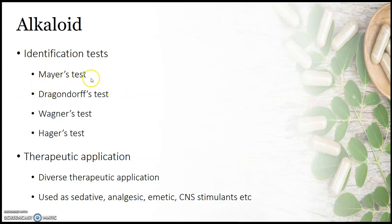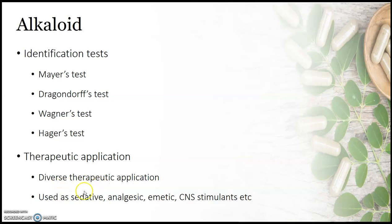These four identification tests are Mayer's test, Dragendorff's test, Wagner's test, and Hager's test. As discussed earlier, alkaloids have a diverse chemical nature and because of that they show diverse therapeutic effects.